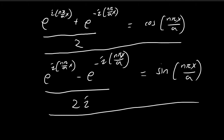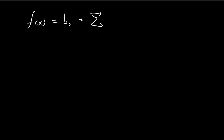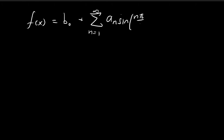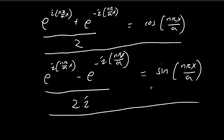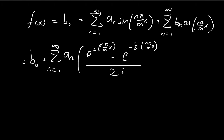Now we're going to use these expressions to derive the exponential form of the Fourier series. We break the original expression into several parts. For n = 0, sine is equal to 0, so the only term that survives is b0. Then we separate the sine and cosine terms and substitute in the exponential expressions we just derived, giving terms with e^(inπx/a) and e^(−inπx/a).